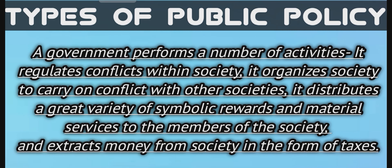Now we discuss types of public policy. In a political system, a government performs a number of activities: it regulates conflict within society, it organizes society to carry on conflict with other societies, it distributes a great variety of symbolic rewards and material services to the members of society, and extracts money from society in the form of taxes.